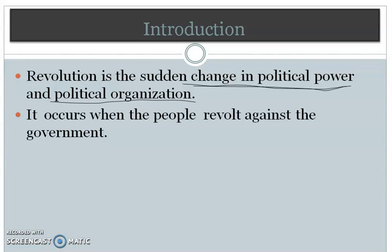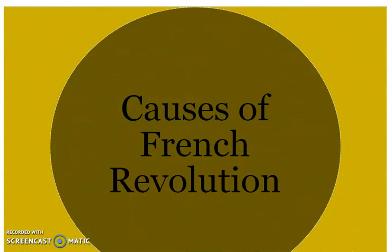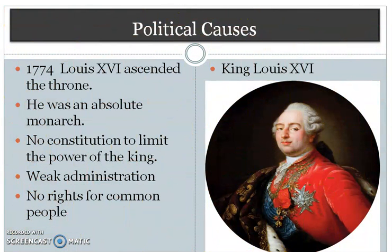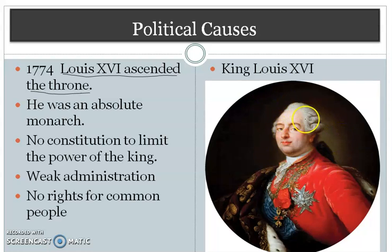Let's see what all the causes were there for the French Revolution. The first important cause was the political cause. The year is 1774 — King Louis XVI ascended the throne, meaning Louis XVI became the king in the year 1774.